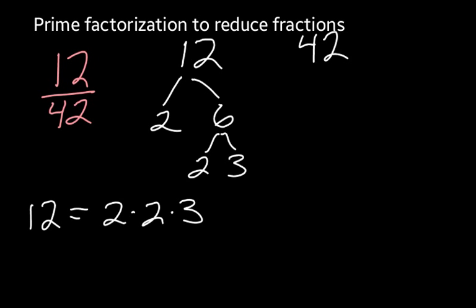For 42, my prime factors are, well, I need to see what can I multiply to get 42. I know that I can do 6 and 7.